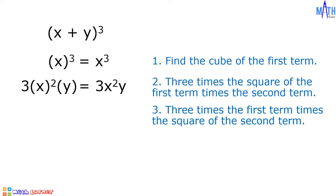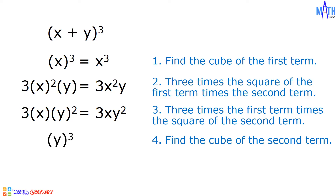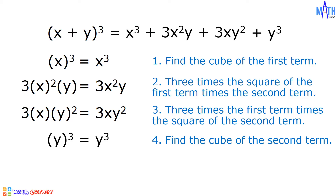Step number 3: 3 times the first term times the square of the second term. We have 3 times x times square of y. Square of y is equal to y squared. 3 times x is equal to 3x. Last step: cube of y is equal to y cubed. And the cube of x plus y is equal to x cubed plus 3x squared y plus 3xy squared plus y cubed.